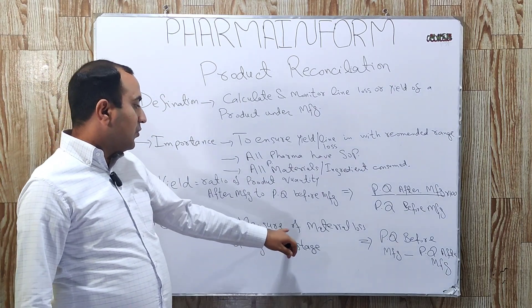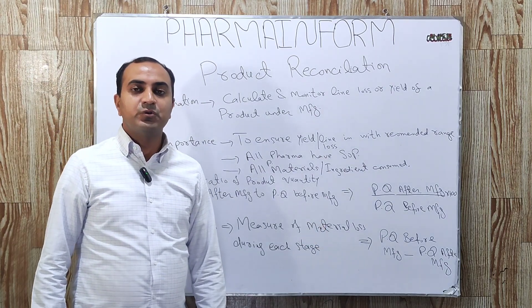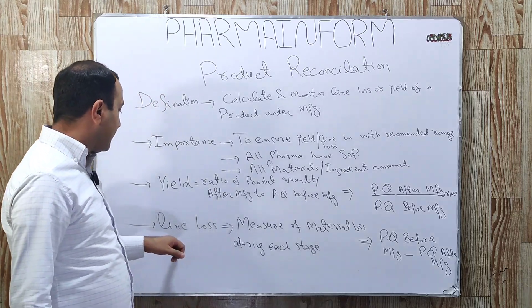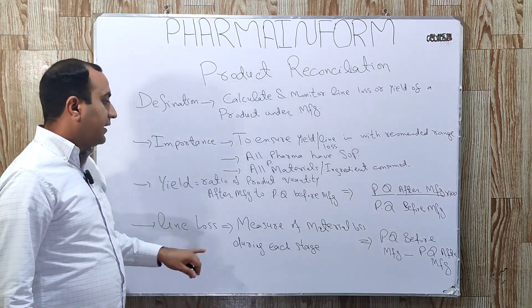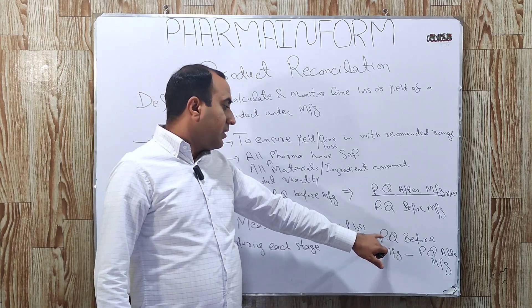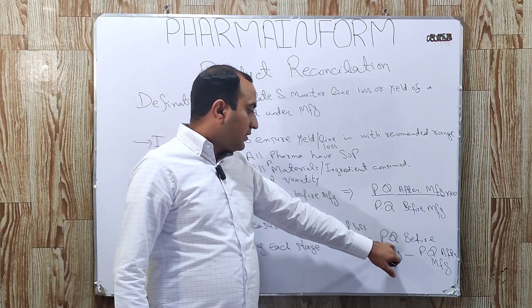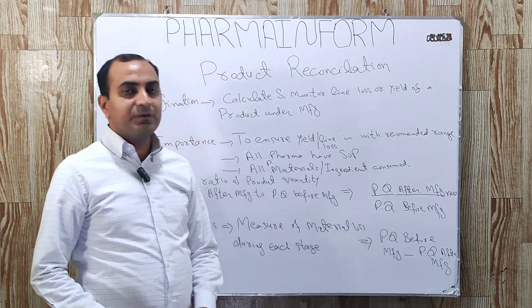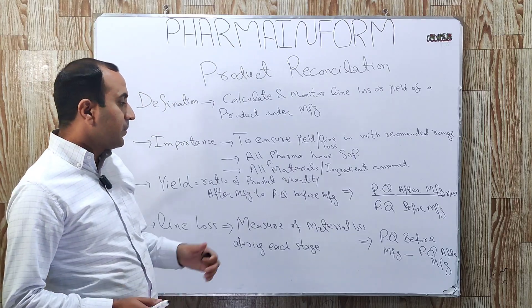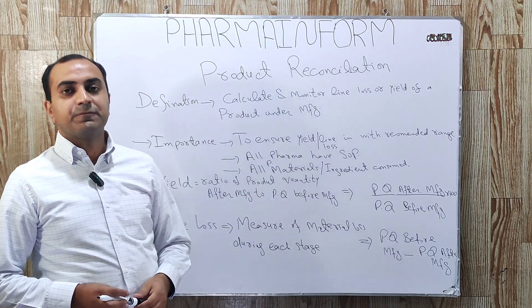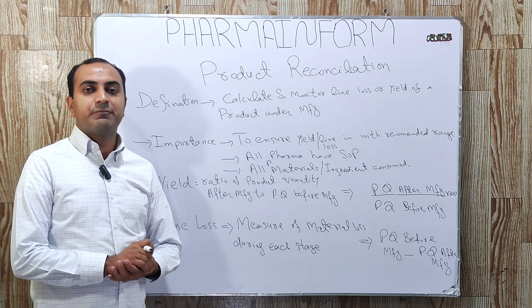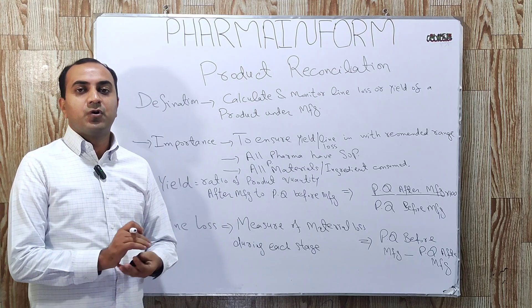What is line loss? The measure of material loss during every manufacturing stage is known as line loss. The formula of line loss is: product quantity before manufacturing minus product quantity after manufacturing.